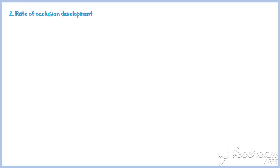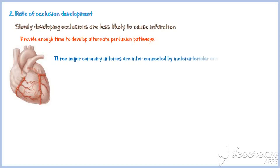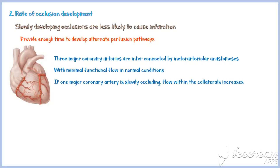The second most important determinant is the rate of occlusion development. Slowly developing occlusions are less likely to cause infarction because they provide enough time to develop alternative perfusion pathways. For example, the three major coronary arteries are interconnected by small interarterial anastomoses with minimal function in normal conditions. If one major coronary artery is slowly occluding, flow within the collaterals increases and may be sufficient to prevent infarction.